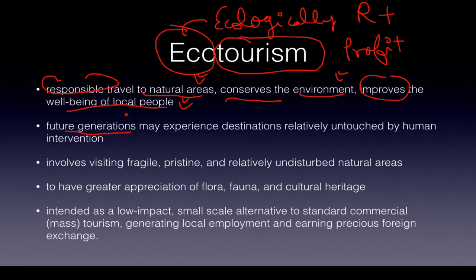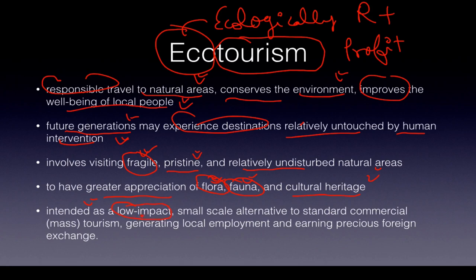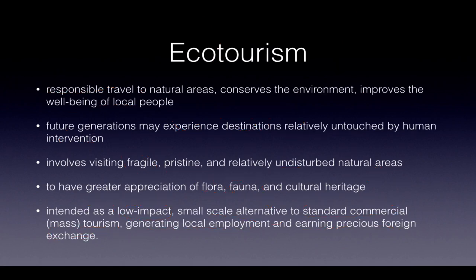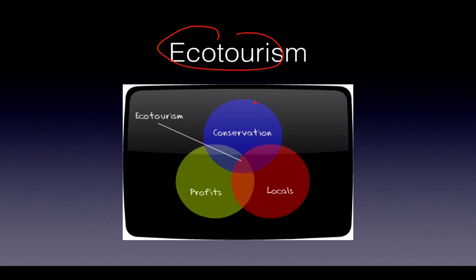Future generations should experience destinations relatively untouched by human intervention — this is possible only through ecotourism. It involves visiting fragile, pristine, and relatively undisturbed areas to develop greater appreciation for flora, fauna, and cultural heritage. It is intended as a low-impact tourism — impact on environment cannot be high, otherwise it cannot be called ecotourism. It is a small-scale alternative to standard commercial or mass tourism. It helps generate local employment and earn precious foreign exchange. The Venn diagram of ecotourism covers conservation, locals, and profits.